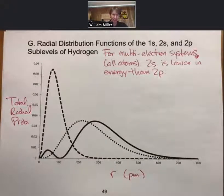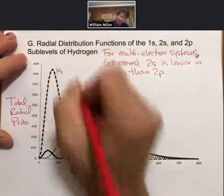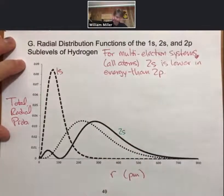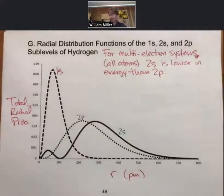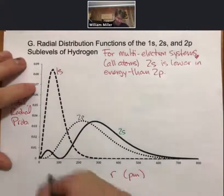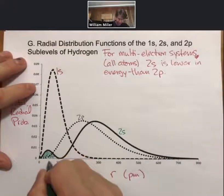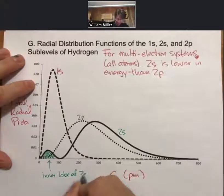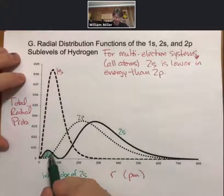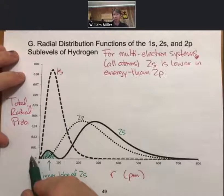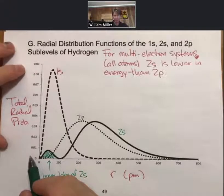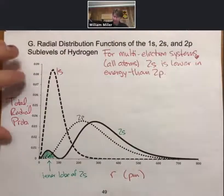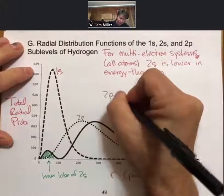Now we have multi-electron systems and the first electrons go into 1s, and then more electrons go into 2s and 2p. And it turns out that 2s is lower energy than 2p because of the inner lobe. So this inner lobe of 2s is attracted more strongly to the nucleus because it is closer than the 2p.